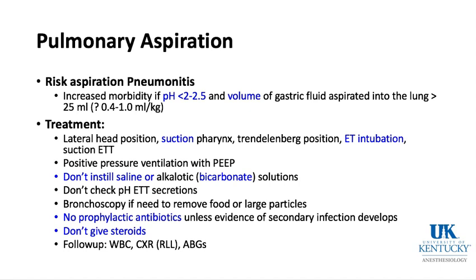Most importantly is the pH. If you aspirated blood with a normal pH, you could aspirate a lot without causing classic aspiration pneumonitis. If someone regurgitates and is likely aspirating, place the head in the lateral position, suction the pharynx, use Trendelenburg position, place an endotracheal tube, and suction the endotracheal tube.